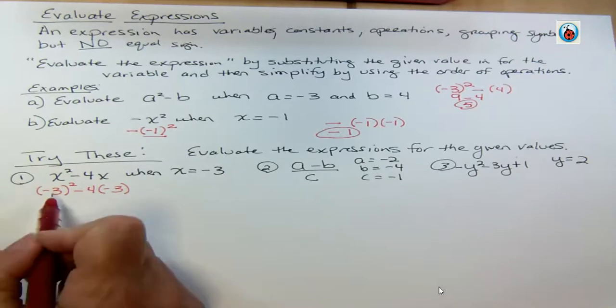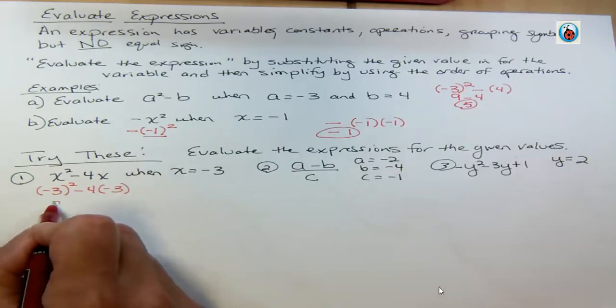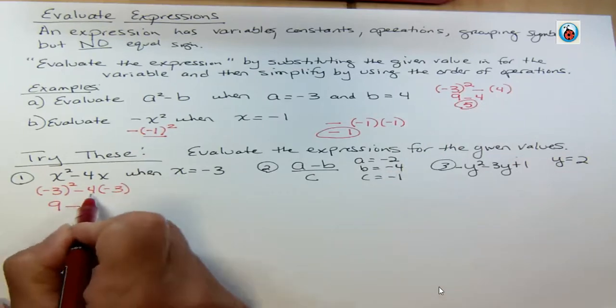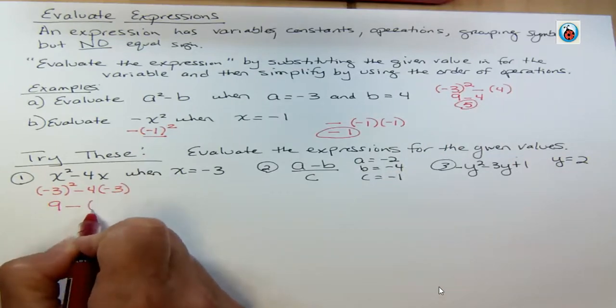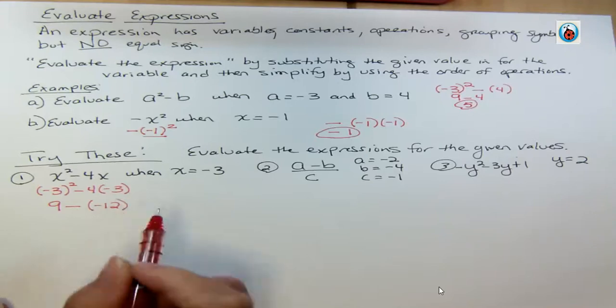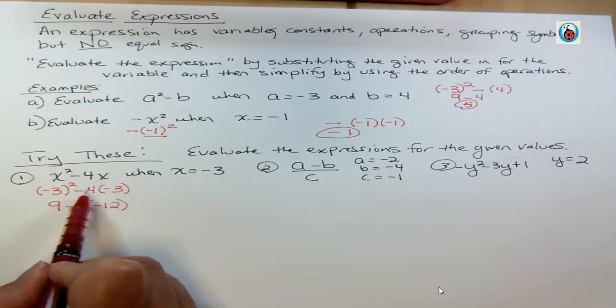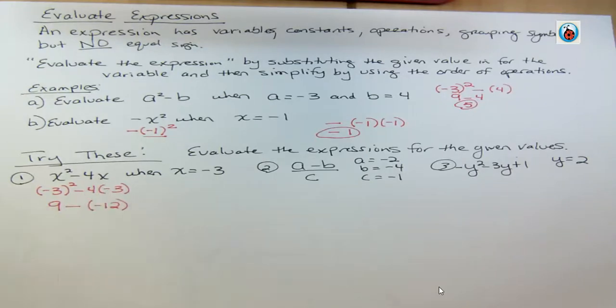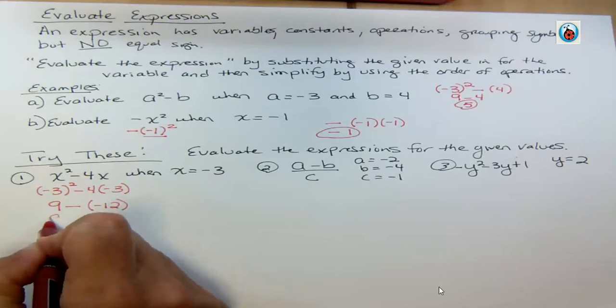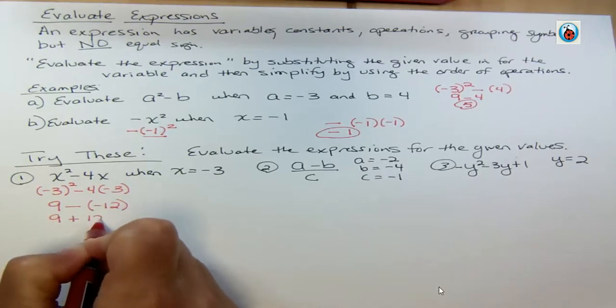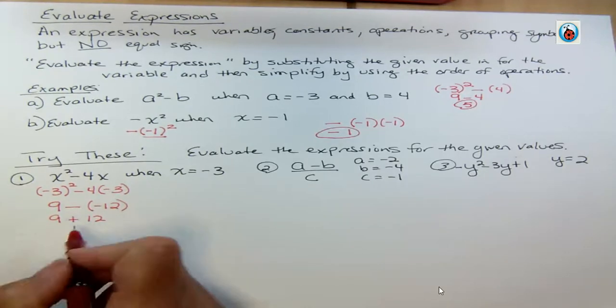Now I'm gonna simplify. Negative 3 to the second power is, we saw it up here, 9. And then I have 4 times negative 3, which is negative 12. Now it's okay right here if you say, aren't those two negatives gonna make that positive? Yes, it will. We can think about that as plus positive 12. And so we have 9 plus 12, which is 21.